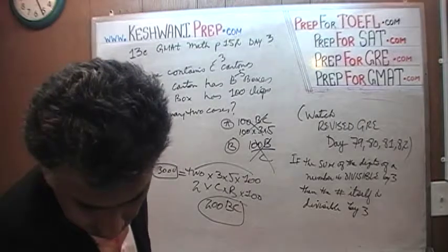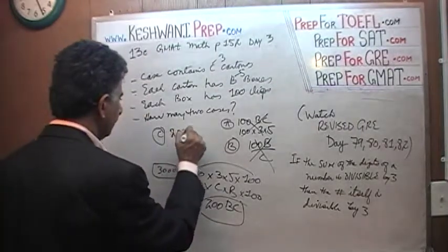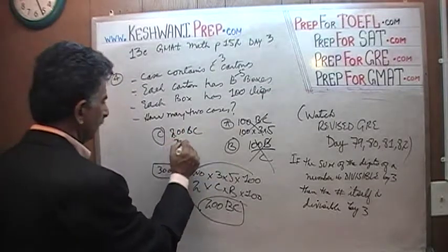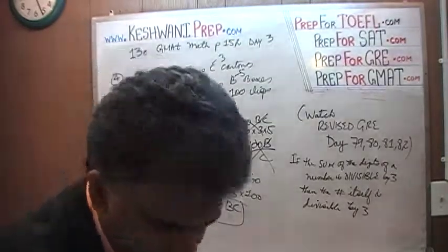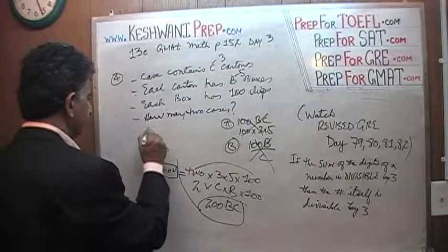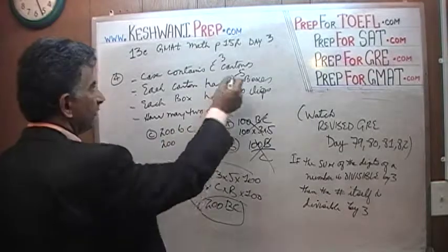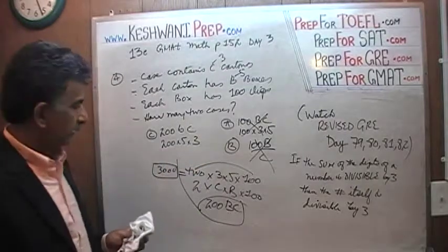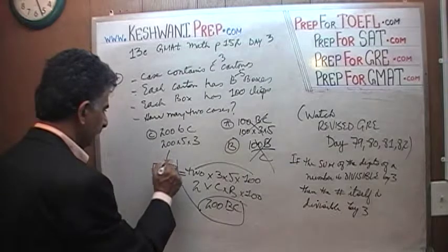The answer is C because C says 200BC. You see right here — 200 times B, which was our 5, times C, which was our 3. 15 times 200 is 3000. The answer is C.